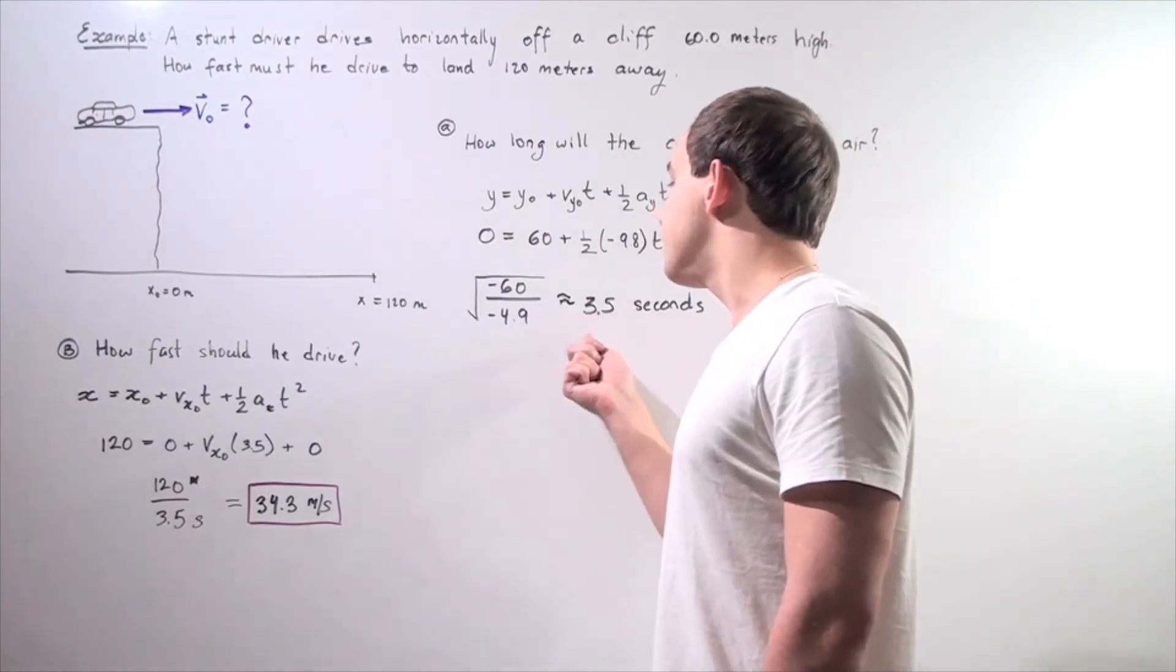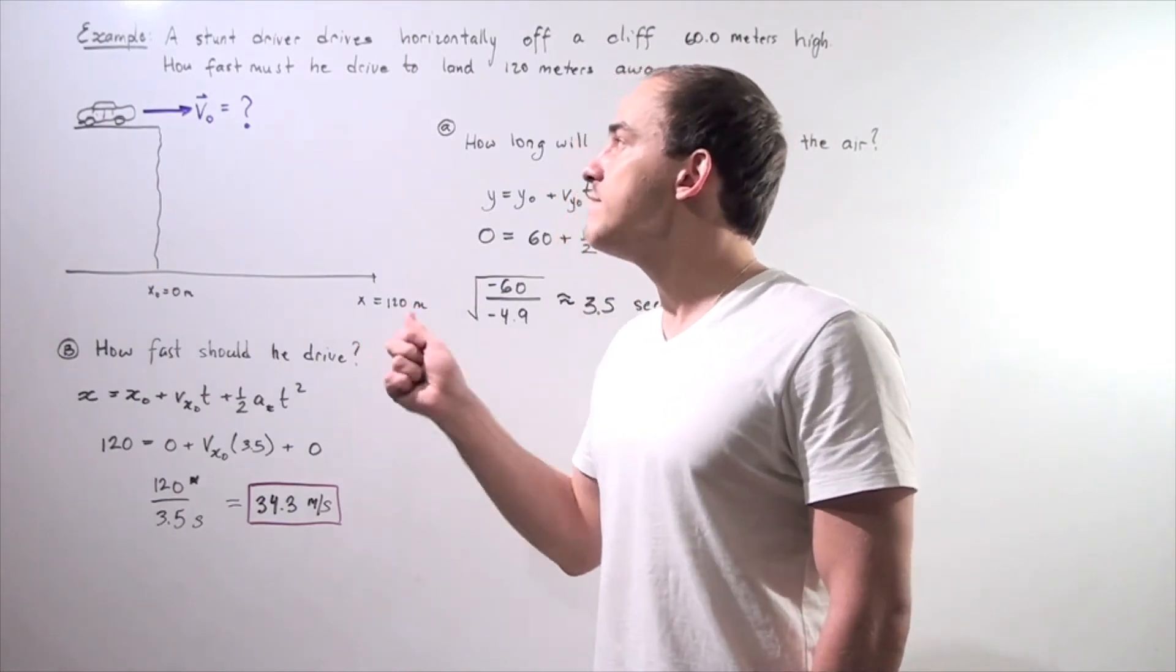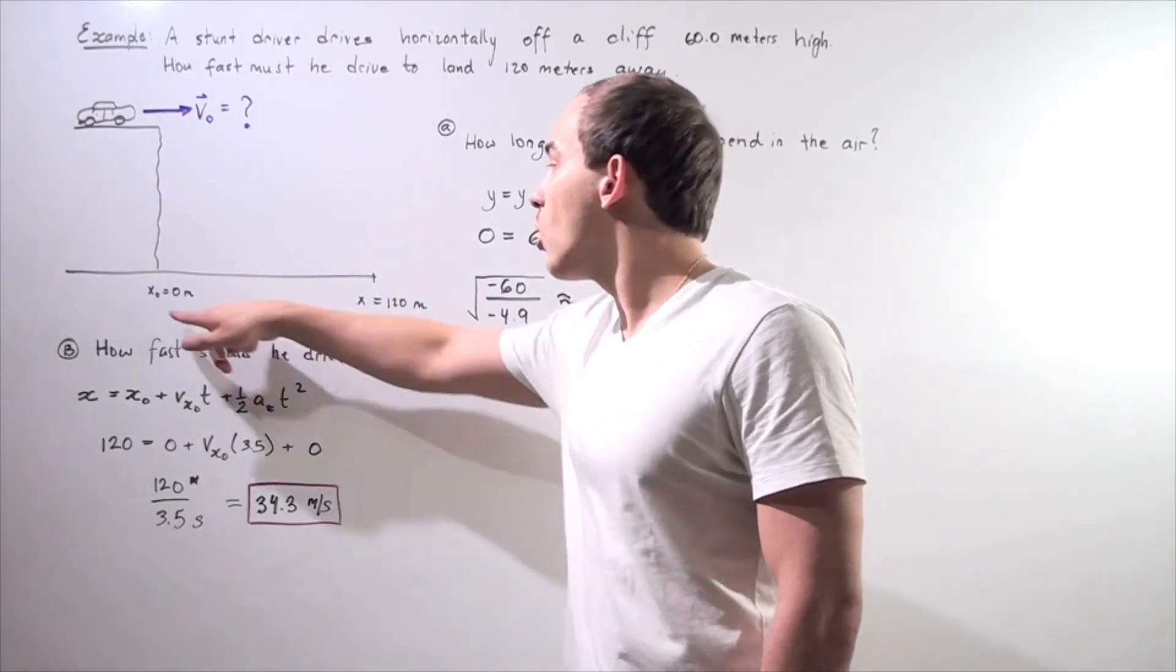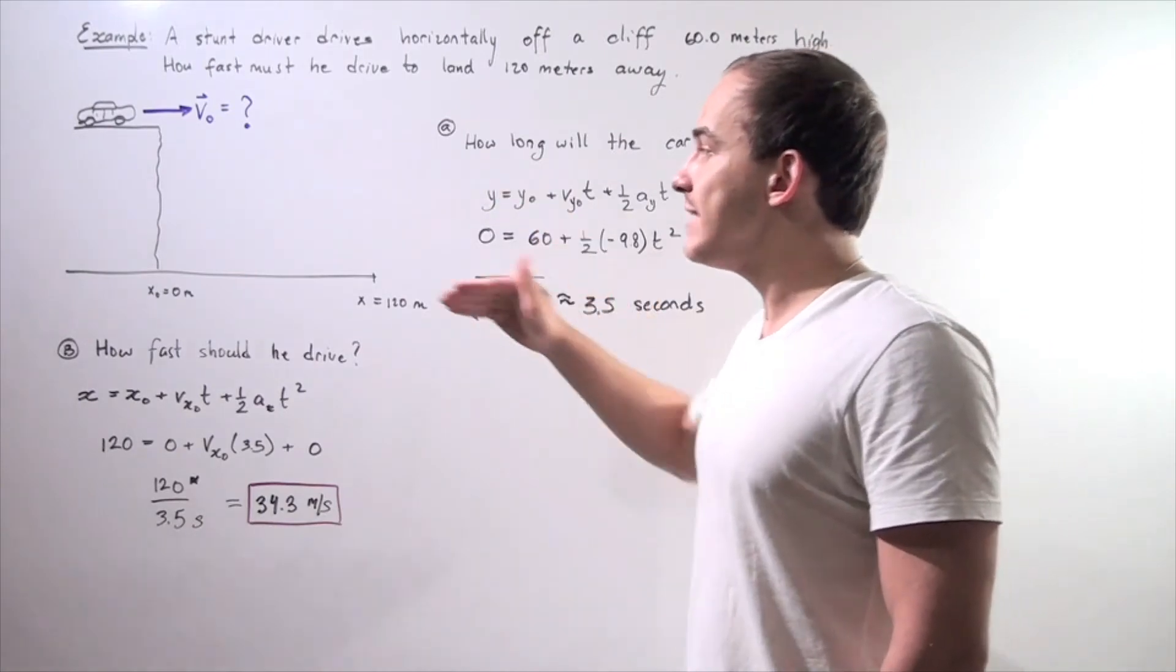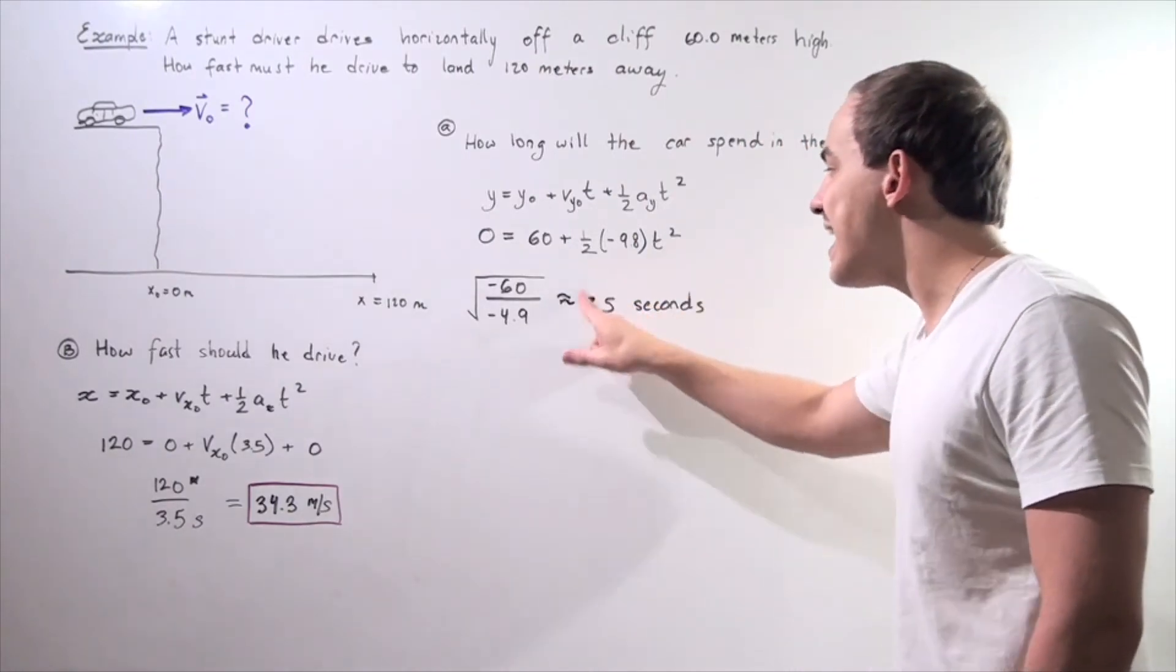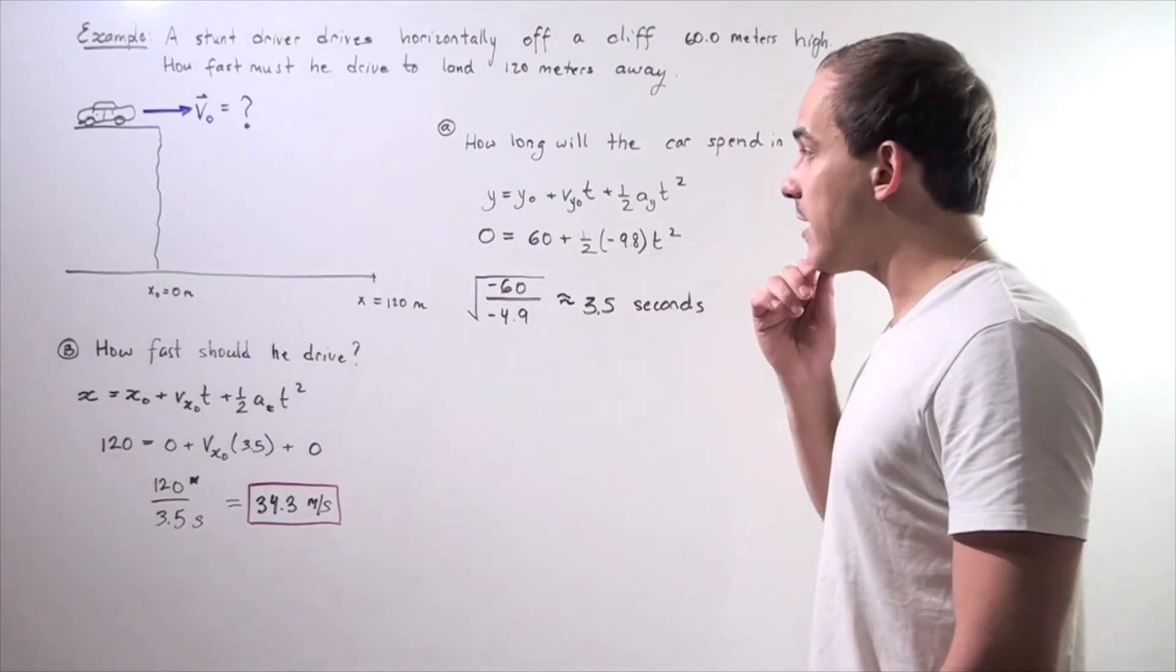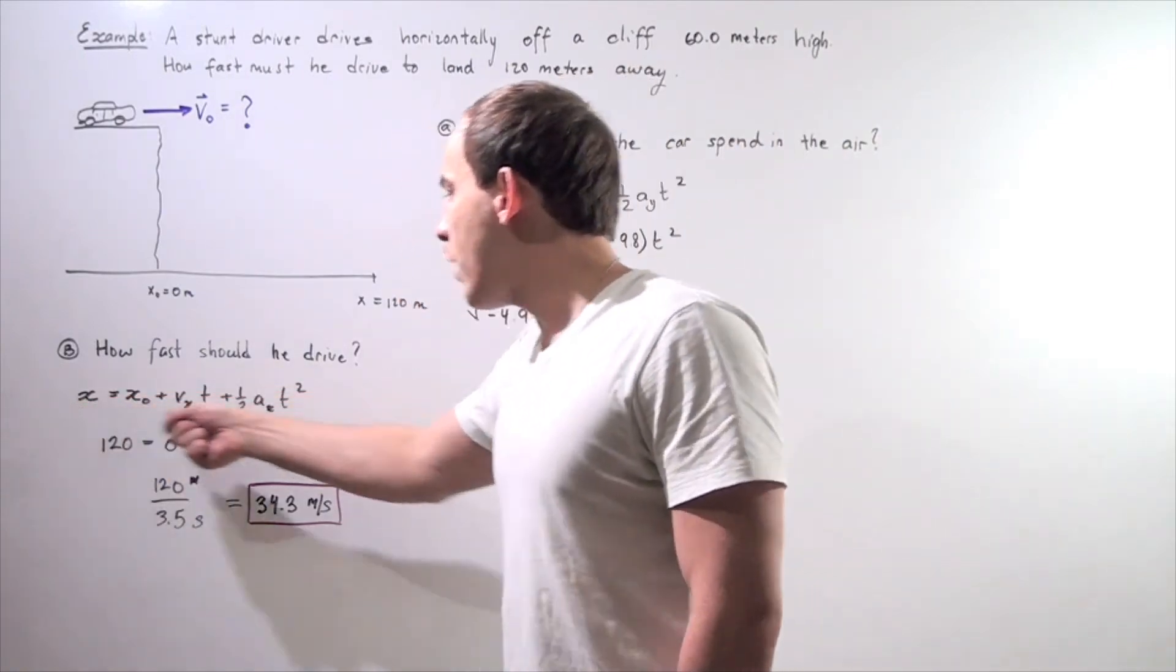Now we can use this information to find our initial velocity of our car. In other words, how fast must our car be driving horizontally to make it across this distance of 120 meters if it begins at a distance of 60 meters above and knowing that it takes 3.5 seconds to cross, or 3.5 seconds in the air to get from our cliff to the ground.